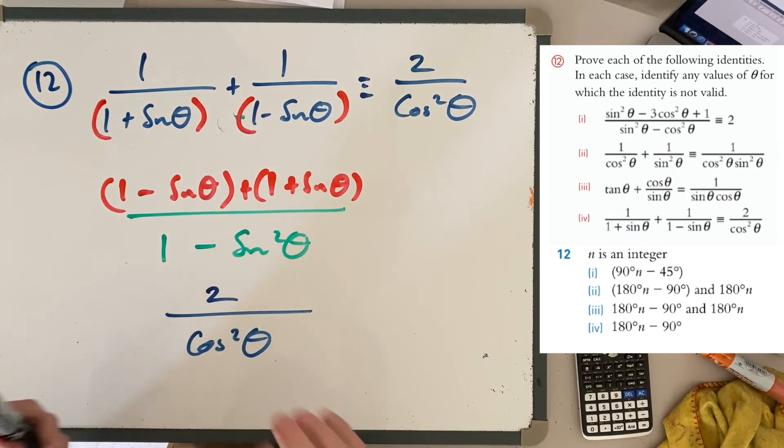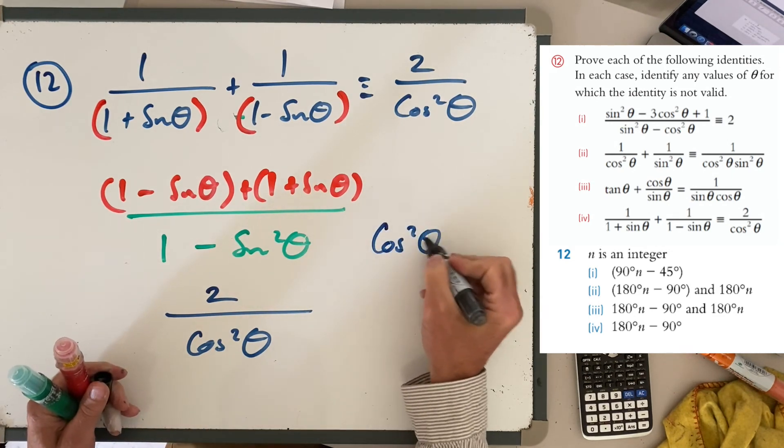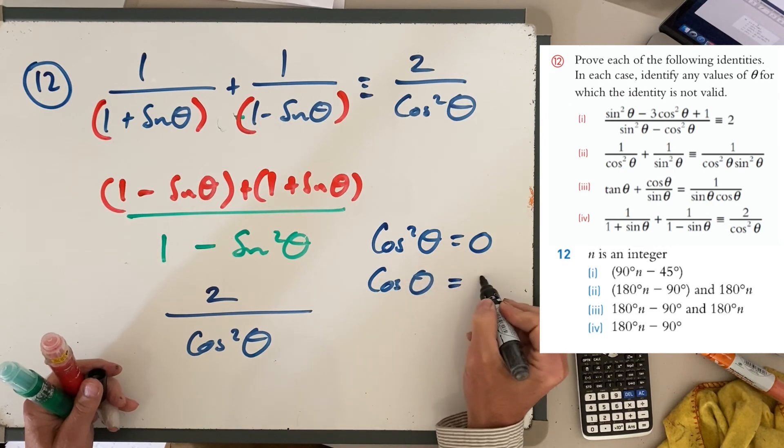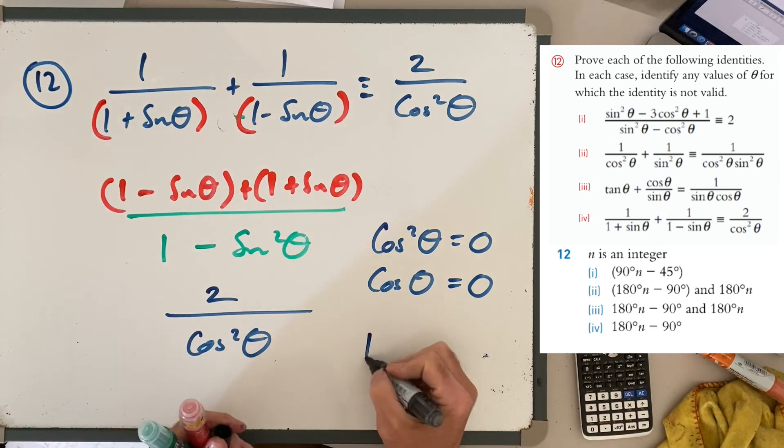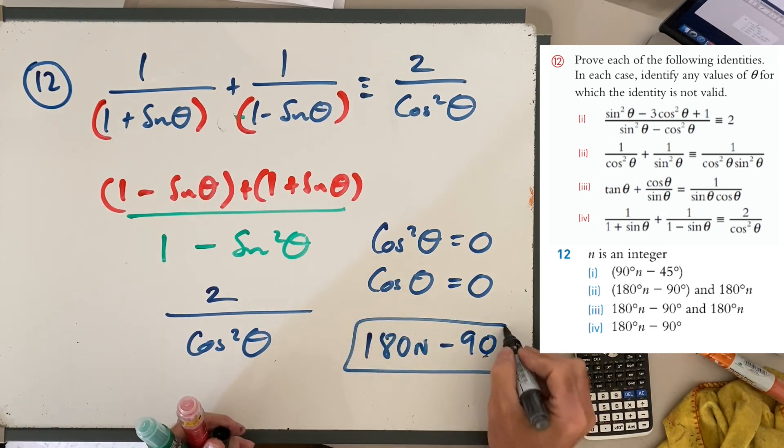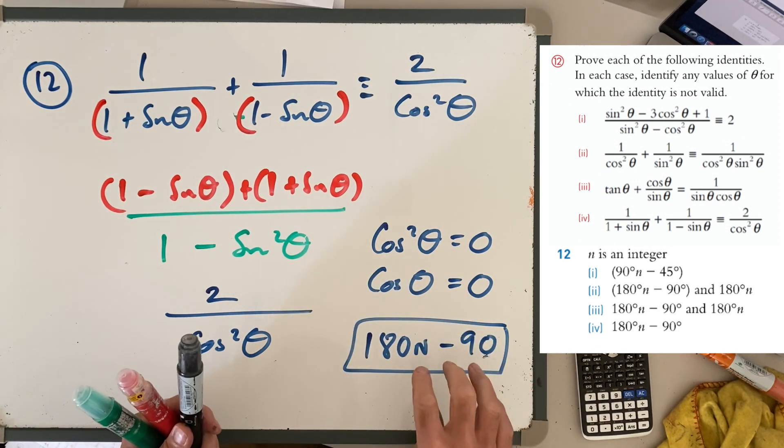Now again, undefined when cos² θ = 0, and that is where cos θ = 0, and that's at your 90°, your 270°, etc. The way they describe that is 180n - 90°, that's where you can't have the value of θ if it satisfies that.